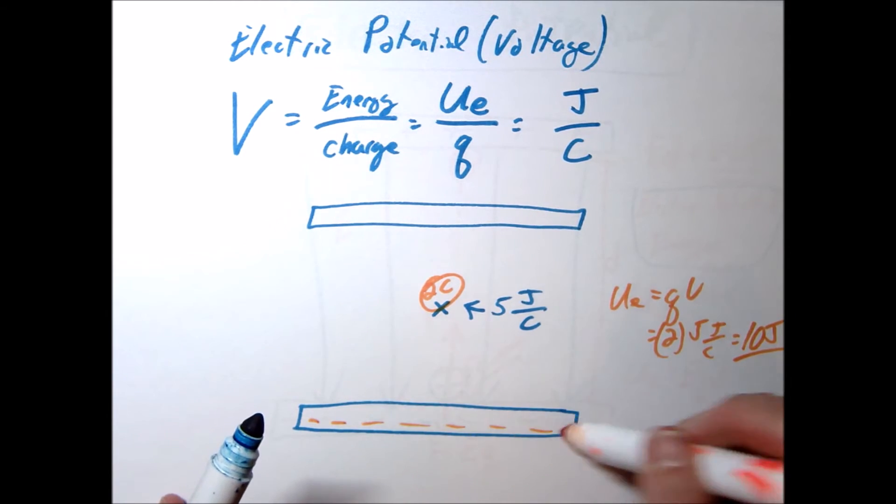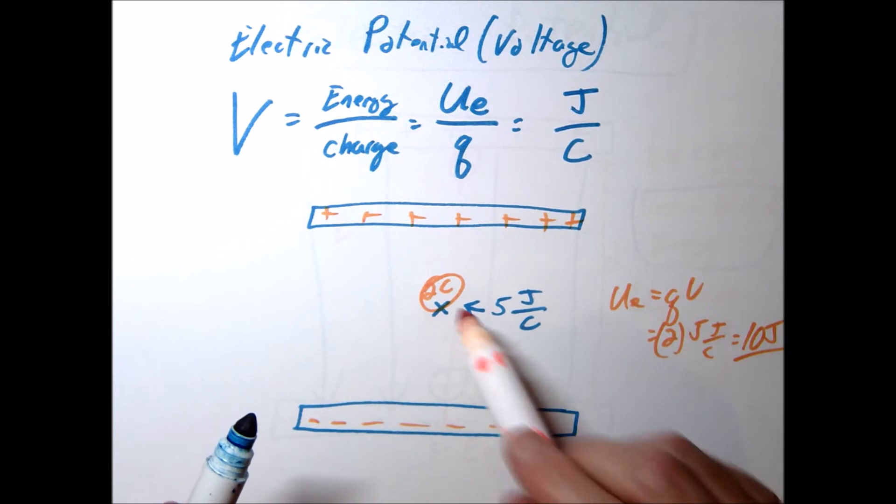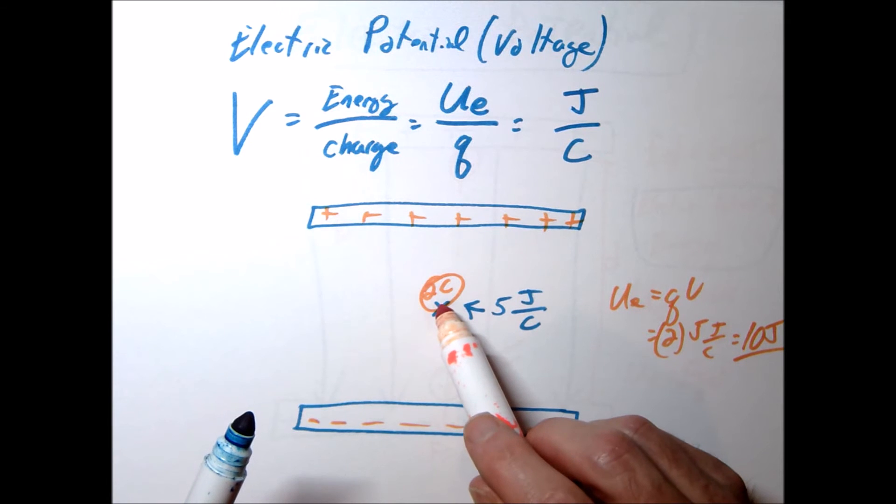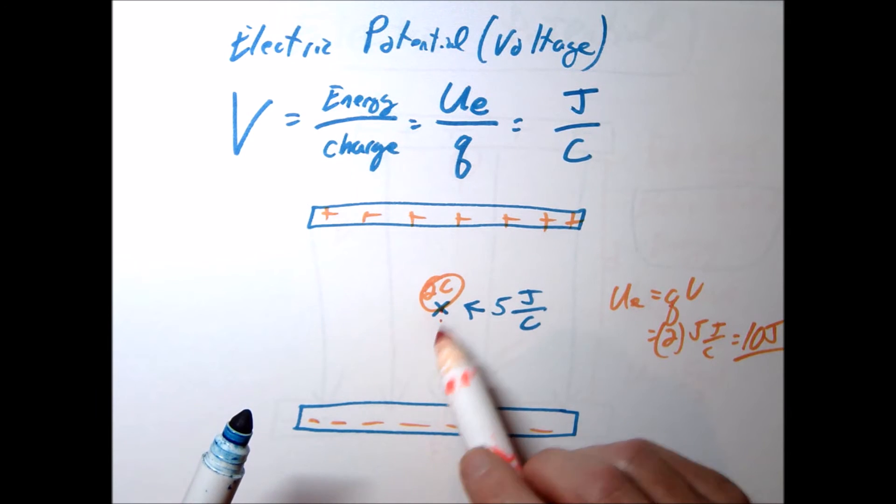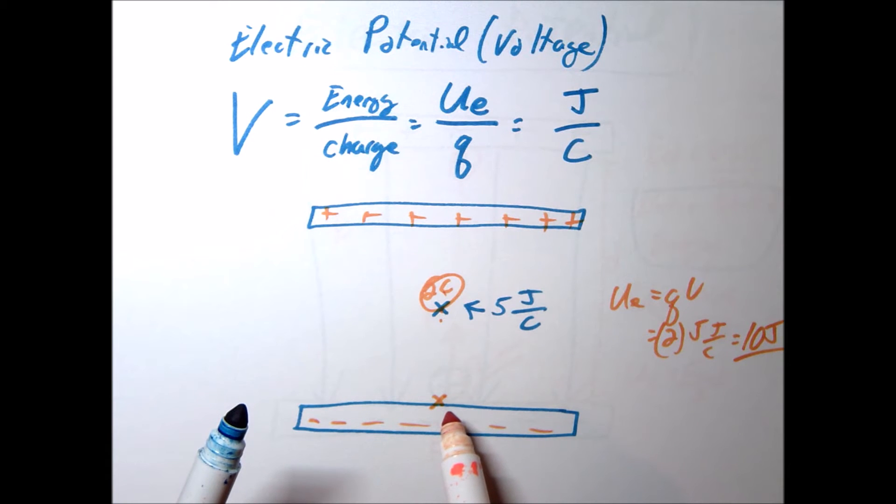Remember, if I charge these up to negatives, this up to positive, it now has 10 joules of potential. Well, as this proton starts to drop, or this two coulomb charge starts to drop here, it's going to be losing potential energy. In fact, right here at the bottom, it would have zero joules of potential energy.